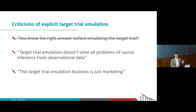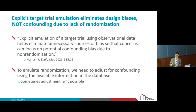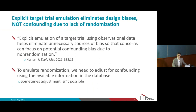Contrary to what many people think, it's very hard to find observational studies with sound design that are contradicted by trials later — there are not many examples of that. The second criticism is that target trial emulation doesn't solve all the problems of causal inference from observational data. The answer is: of course not. What explicit target trial emulation does is eliminate biases due to bad design — selection biases and immortal time biases. It does not eliminate biases due to confounding or lack of randomization.